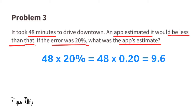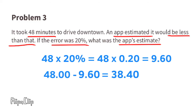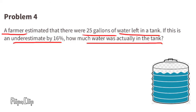Nine and six tenths, or nine and sixty hundredths. The 48 minutes it took to drive downtown minus 9.60 equals 38.40. This means the app's estimate was 38.40 minutes. Problem number four — a farmer estimated that there were 25 gallons of water left in a tank.